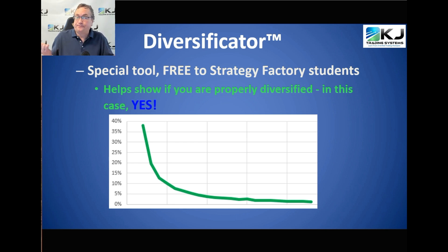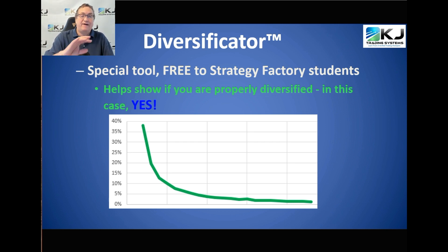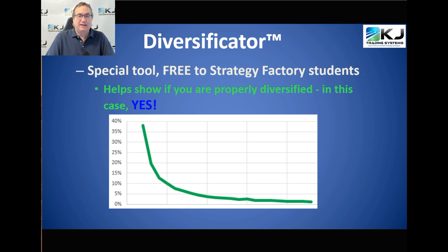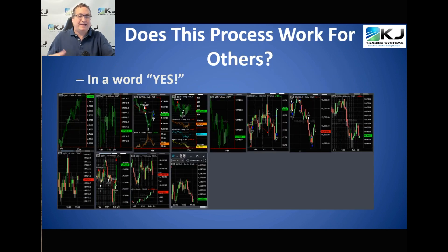If you only had a couple of strategies, the diversification curve is really steep, telling you that you don't have enough diversification. If you had a hundred strategies it would be a flat line, suggesting maybe too many. You want to find the balance where diversification really takes hold and you maximize it. My students use the Diversificator — I recently released it and have gotten a lot of great feedback.